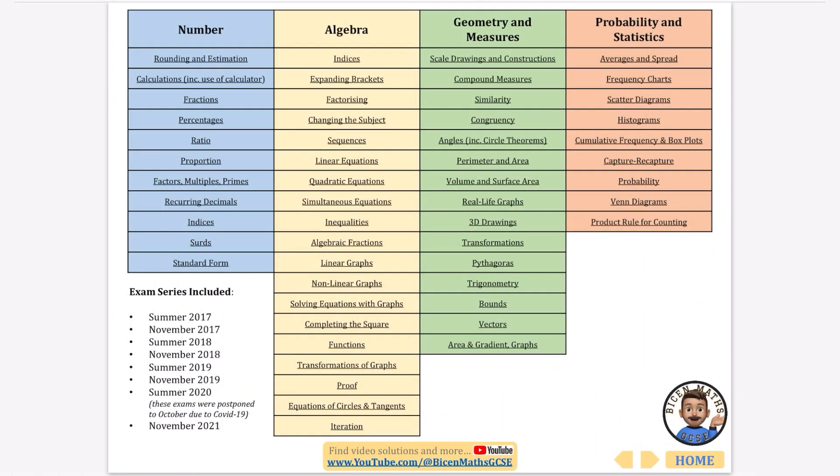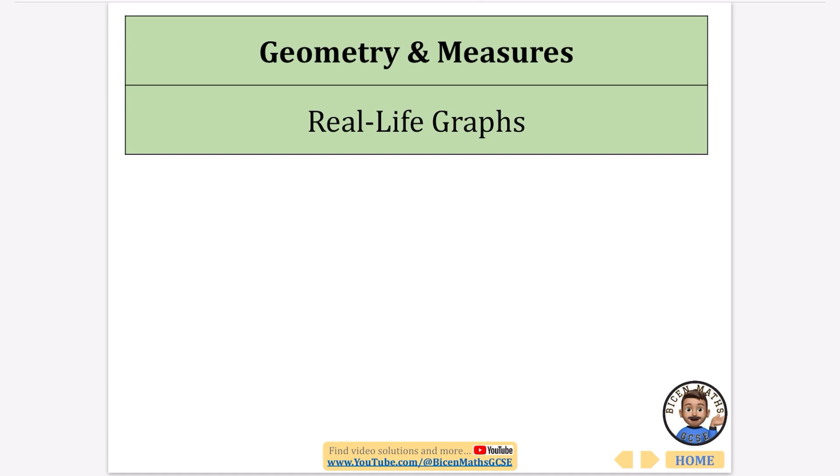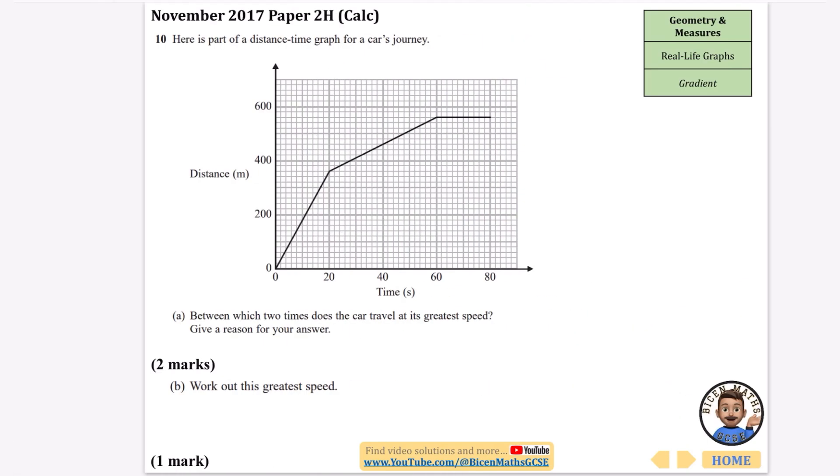I'm continuing with my series of every exam question that's ever been asked. I'm going to be looking at real-life graphs. It's worth noting real-life graphs also come up in the section at the bottom which is area and gradient with graphs, and they're a little bit more sophisticated. This isn't the only place these things get asked. If you do want to use this document, it is fully hyperlinked so you can click things on a PDF and it will take you through to all the different sections.